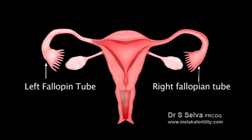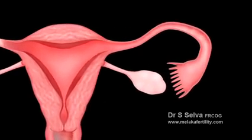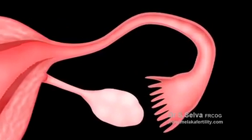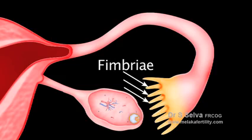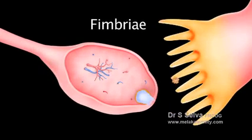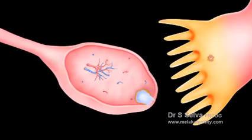The fallopian tubes, sometimes simply called tubes, are the two channels that connect the ovaries to the uterus. They are the main structures that facilitate fertilization. Each tube is divided into five main portions. The fimbriae are the fringe-like structures located at the end of the tube that capture an egg released from the ovary and draw it into the tube.